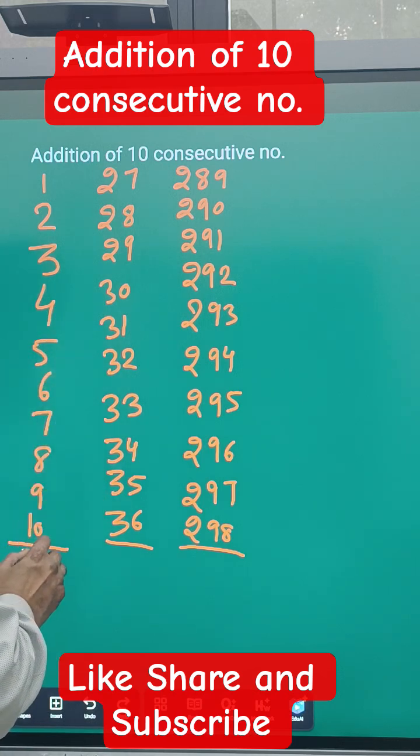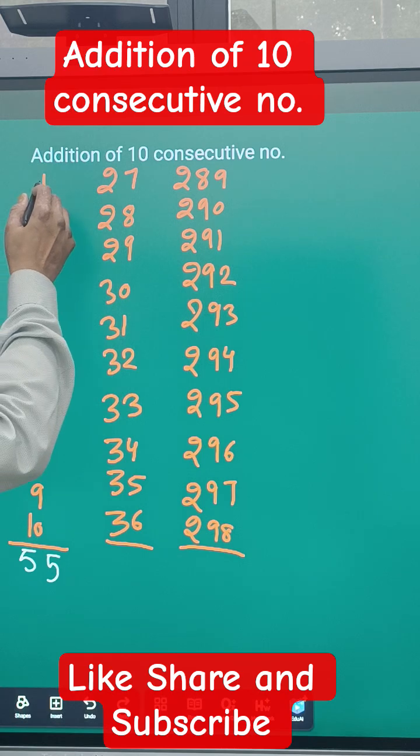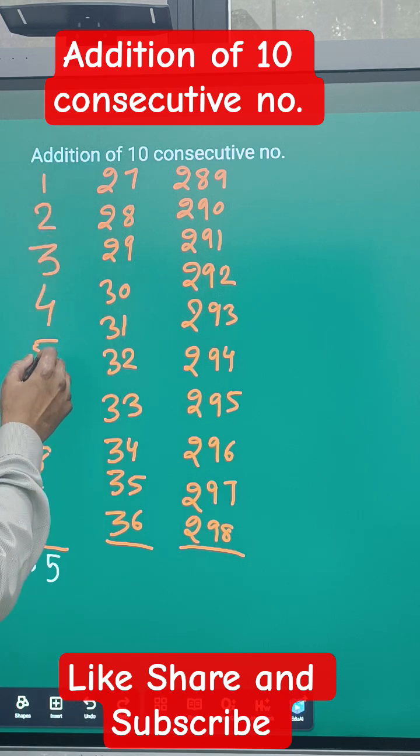If we add all these numbers, we can directly say the answer is 55. Now what is the rule for this? If you add, you'll check and get the answer 55. So what is the rule here?